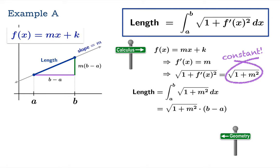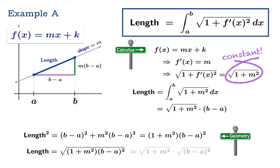The Pythagorean theorem tells us then the length squared we're looking for is b minus a squared plus m squared times b minus a squared. We can factor the b minus a squared to one side and when we take the square root we will notice that we arrive at the same answer. In fact the arc length is square root of 1 plus m squared times b minus a.